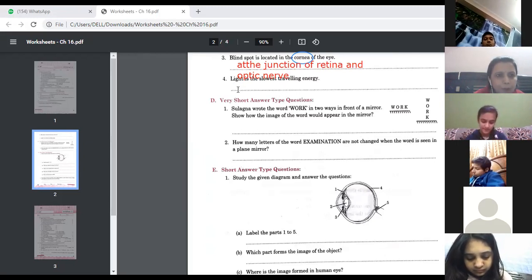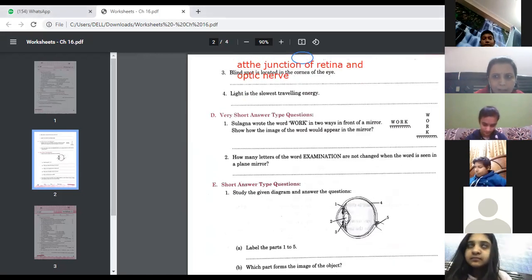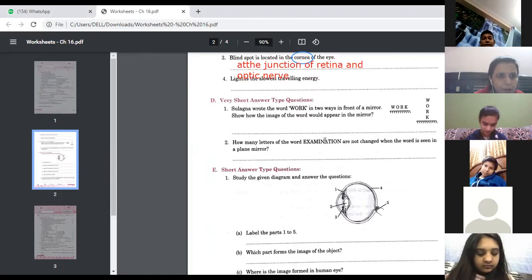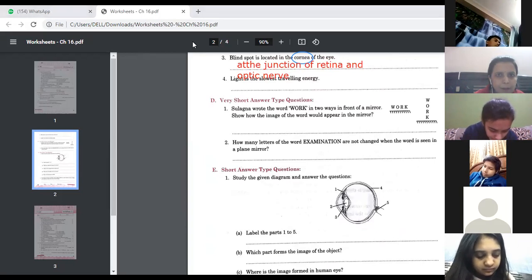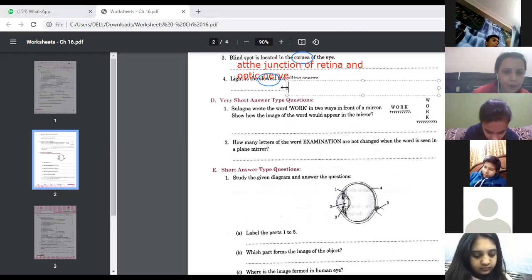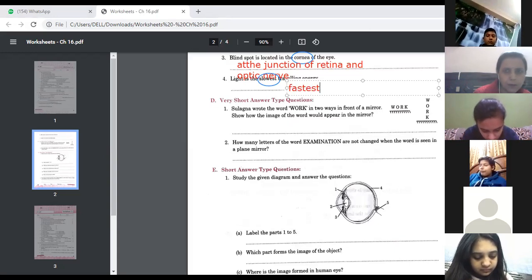Tell me number four. What can you find? Light is the slowest traveling energy. Is it? Fastest. Yes, so mark it, this is wrong. Light is the fastest. Instead of the slowest, it will be the fastest.